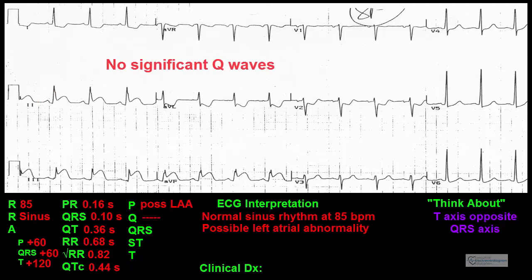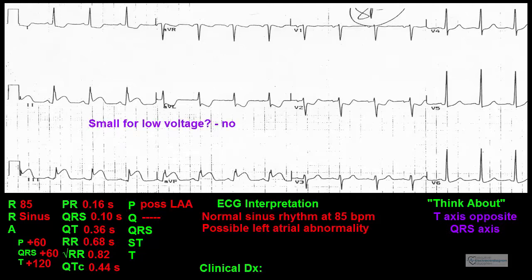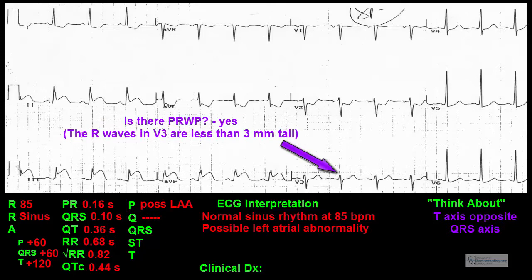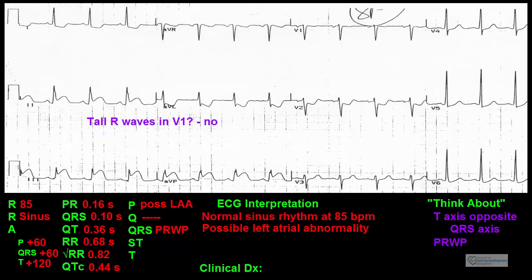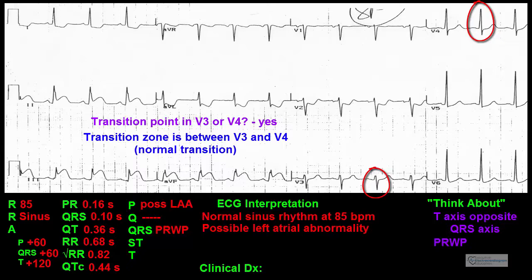Q waves: There are no significant Q waves seen. QRS complexes — let's ask the six questions. Are they tall, suggesting left ventricular hypertrophy? No. Are they small, suggesting low voltage? No. Are they wide, suggesting a bundle branch block? No. Are the R waves in V3 less than 3 mm, suggesting poor R wave progression? Yes — this will be noted in the think-about section. Are there tall R waves in lead V1? No. Is the transition point in lead V3 or V4? Yes — it is between V3 and V4, which is normal transition.